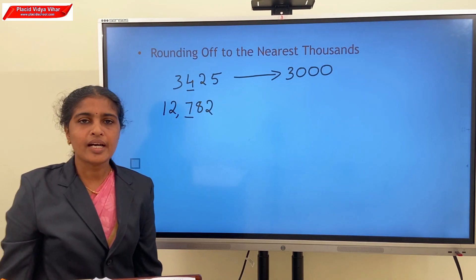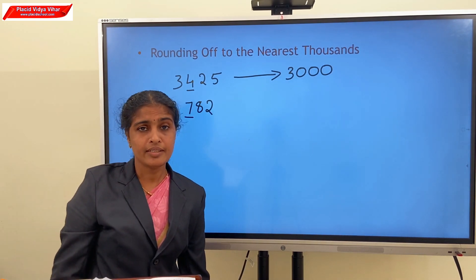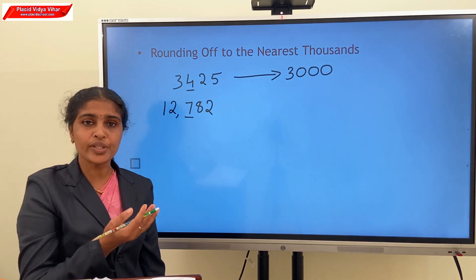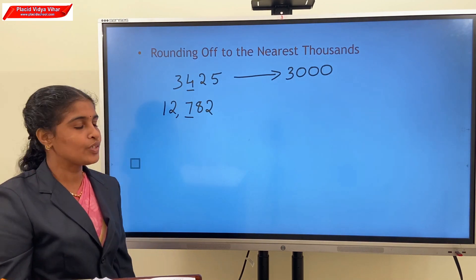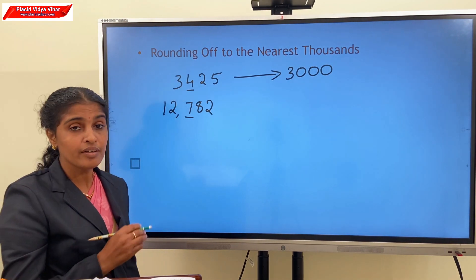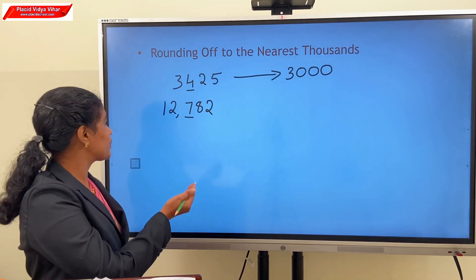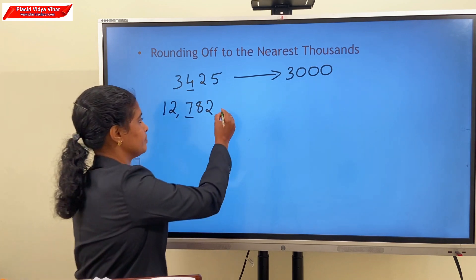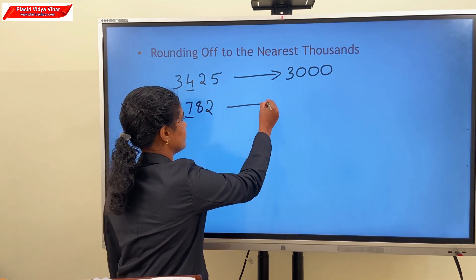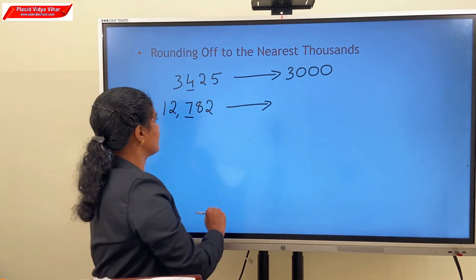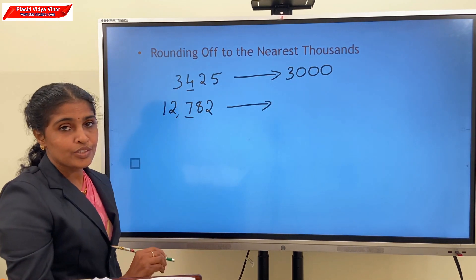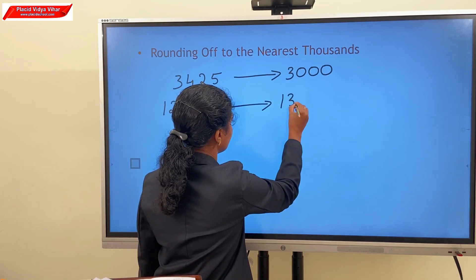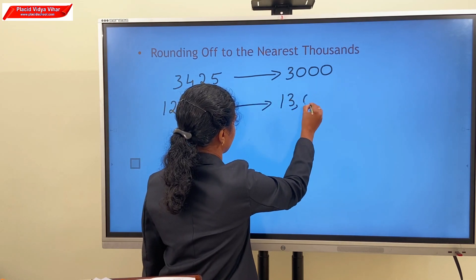Here the hundreds digit is 7, which is more than 5. So we add 1 to the thousands place. Our answer is 13,000.